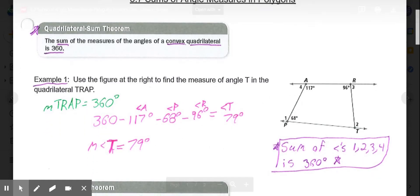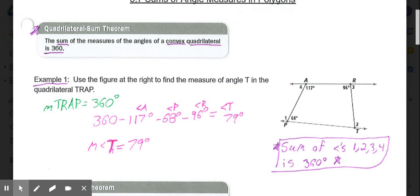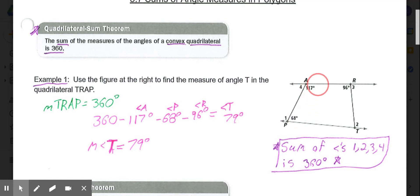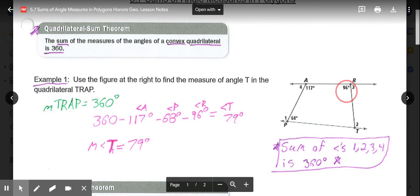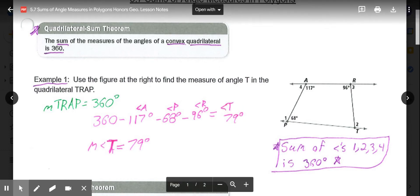Our first example is looking over here at our quadrilateral TRAP. They gave us three of the interior angles, 68, 117, and 96. If we do 360 minus those three angles, we will get our measurement for our missing fourth angle T. 360 minus angle P, R, and A left me with 79 degrees for angle T.